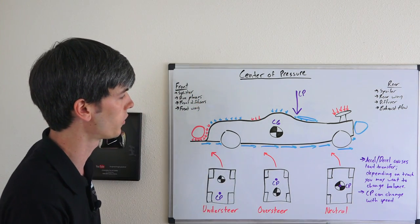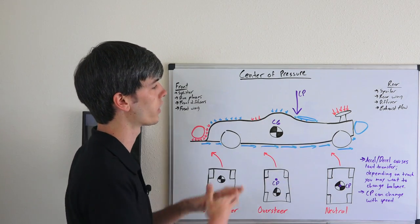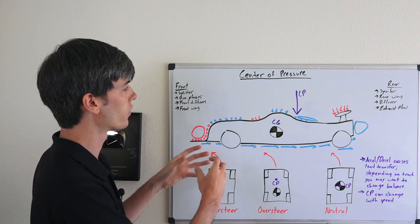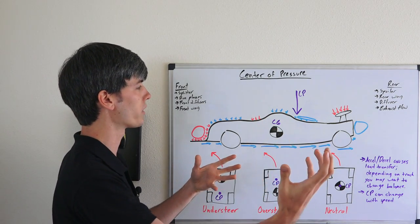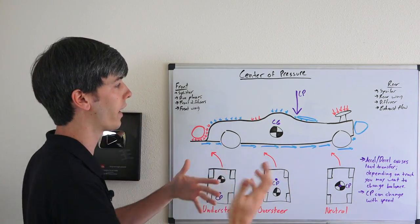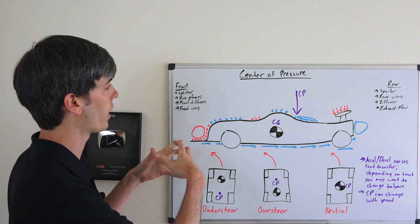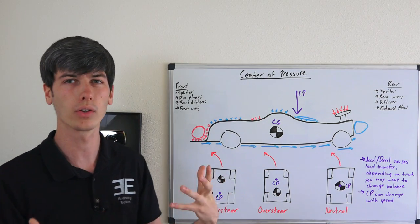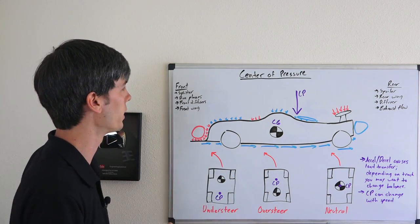Also, the center of pressure can change with speed. All these different aerodynamic features are more or less efficient than one another. So as you start to get to higher speeds, some of them will provide more downforce, some of them won't provide as much downforce. As a result of that, your center of pressure can change with speed. So that's another thing you can play with and try to optimize at every speed.